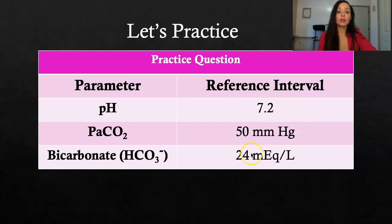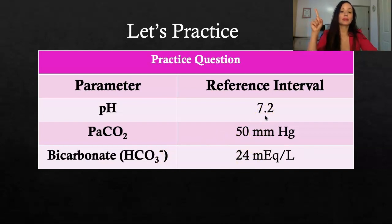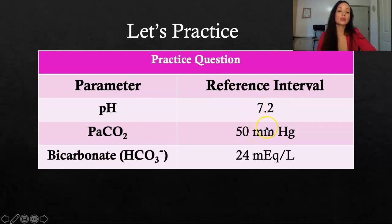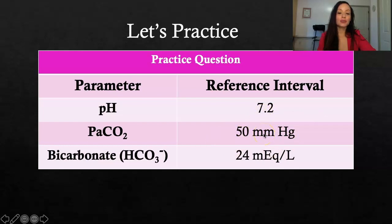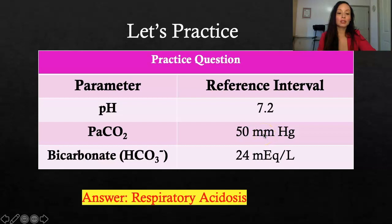Let's try another one. pH of 7.2, CO2 of 50, bicarb of 24. The pH is low. The CO2 — normal is 35 to 45 — so 50 is elevated. We have a low pH and a high CO2 with a normal bicarb: respiratory acidosis. The pH is low, CO2 is high, and the arrows are pointing in the opposite direction.